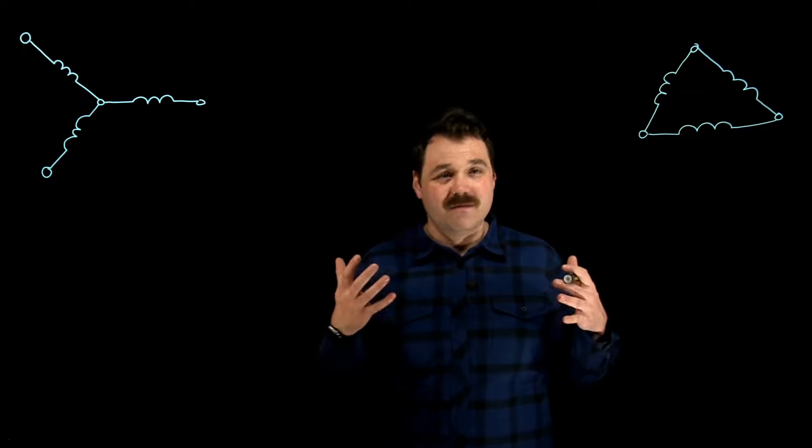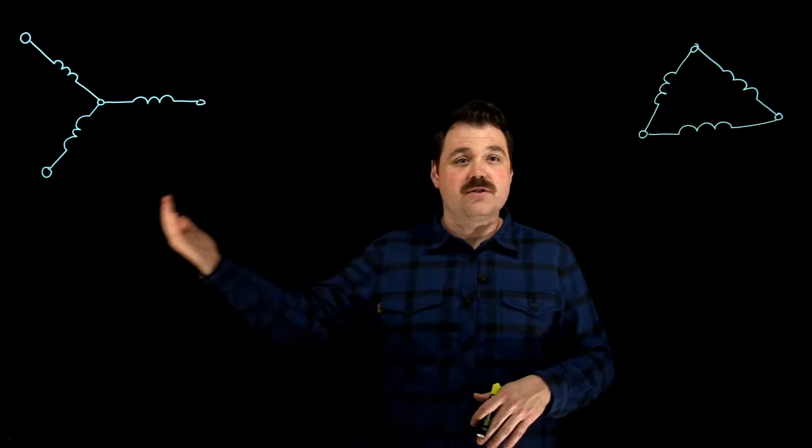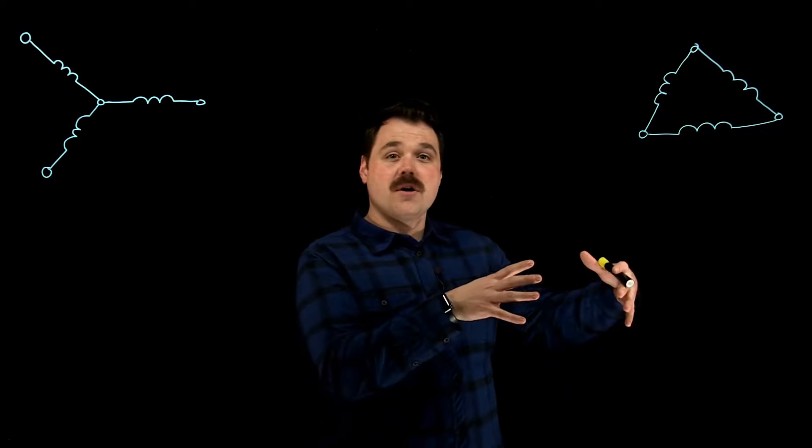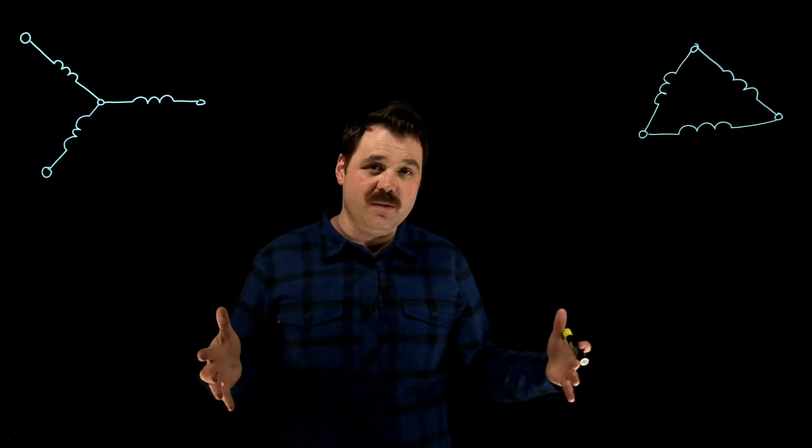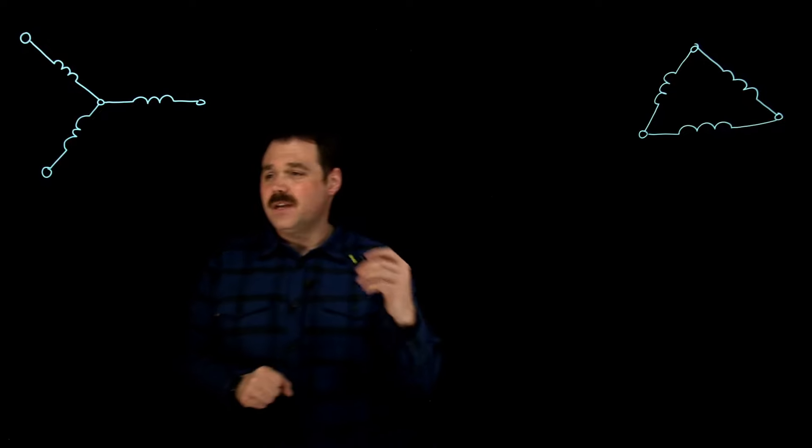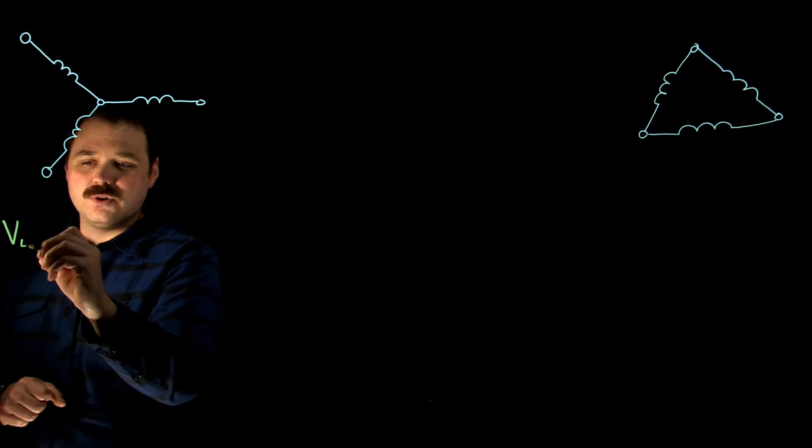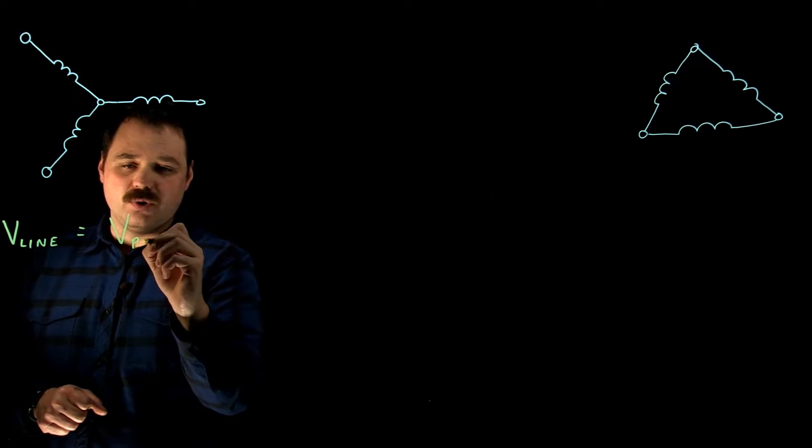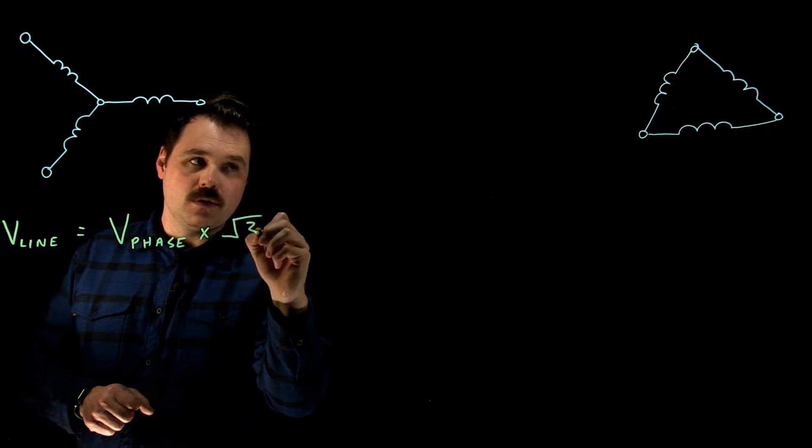So let's start off talking about voltage. Now this could be an applied voltage from a source from an alternator or generator, or this could be a voltage drop onto a load. These rules apply whether we're talking a source or whether we're talking a load, they will be true. Looking at Y over here, with Y, we say this is our fundamental law. We say that the line voltage is equal to the phase voltage times root three.